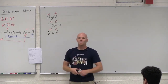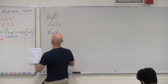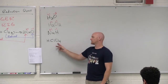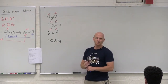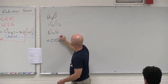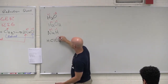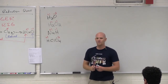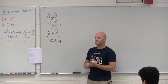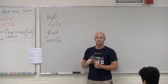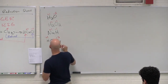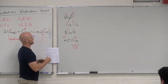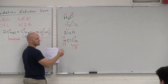Fluorine is always negative one in a molecular compound. Other halogens are usually minus one, unless they're bonded to oxygen. For example, in HClO₄: oxygen is not a peroxide so it gets negative two, hydrogen gets plus one, and chlorine is left to balance the rest. Four oxygens at minus two gives a total of minus eight, plus the one hydrogen at plus one, so chlorine has to be plus seven.